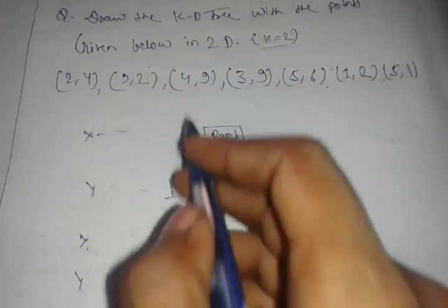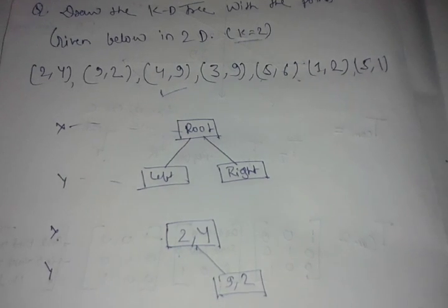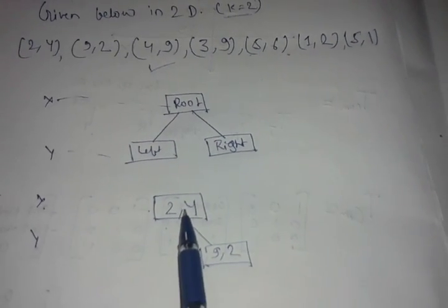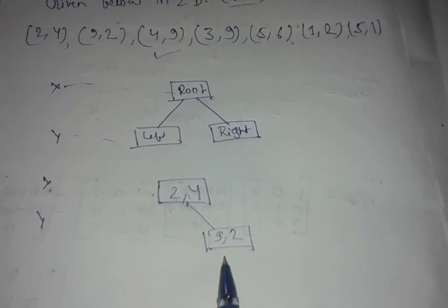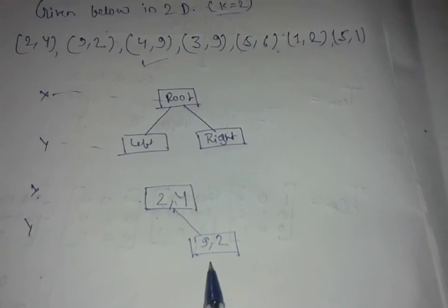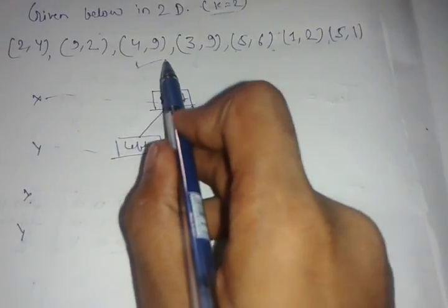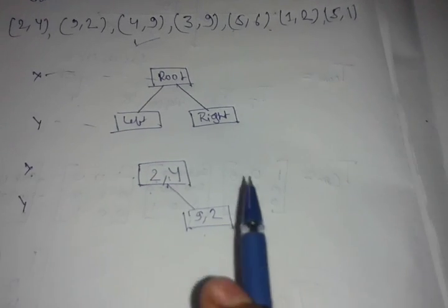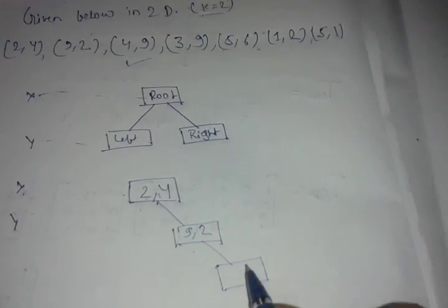Now the next node is (4,9). You check from the root node. In (4,9), 4 is greater than 2, so you come here. Again you need to check alternatively, meaning here you check Y. Y of this node is 9 and Y of this node is 2, so it will be greater than this, so it comes into the right side: (4,9).